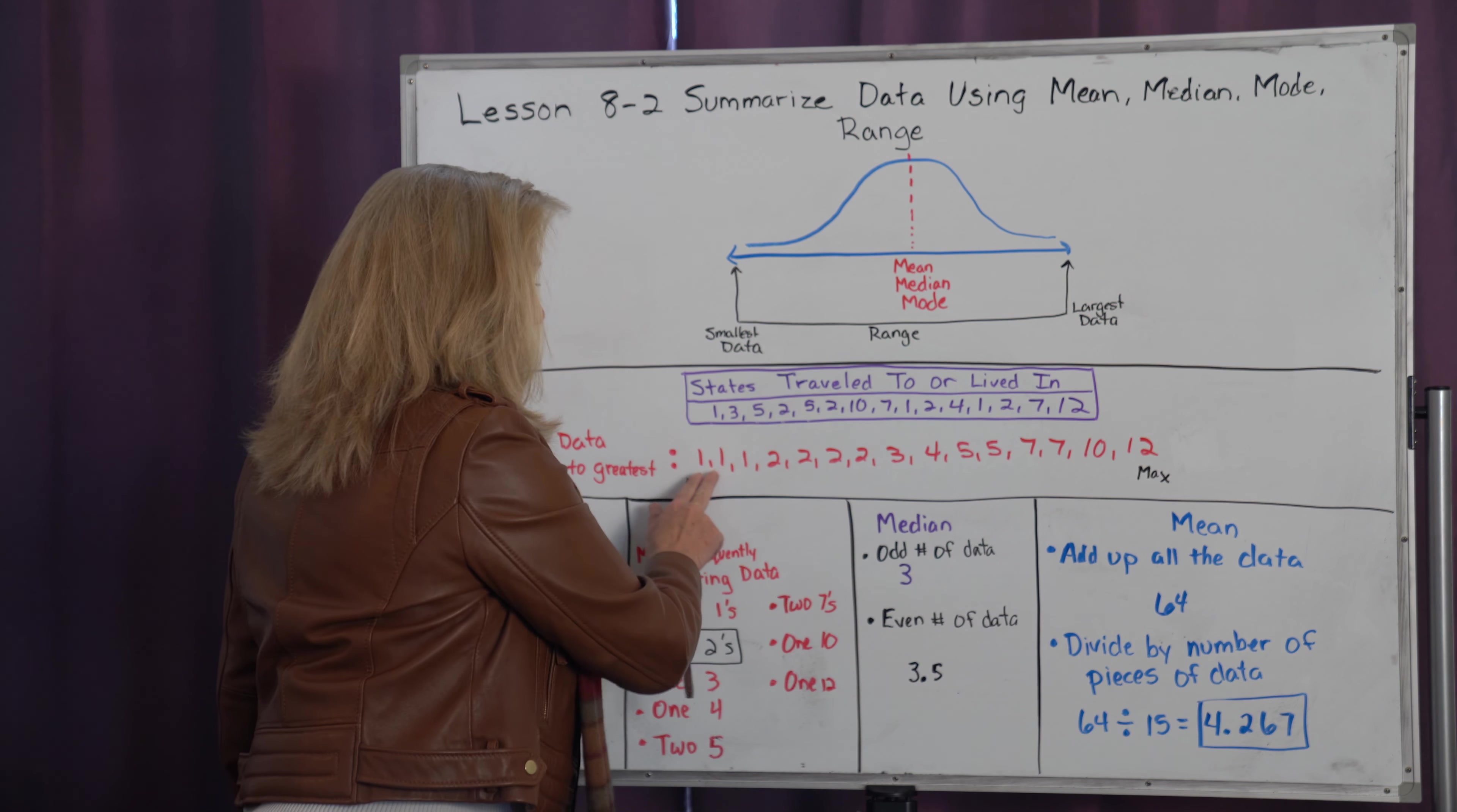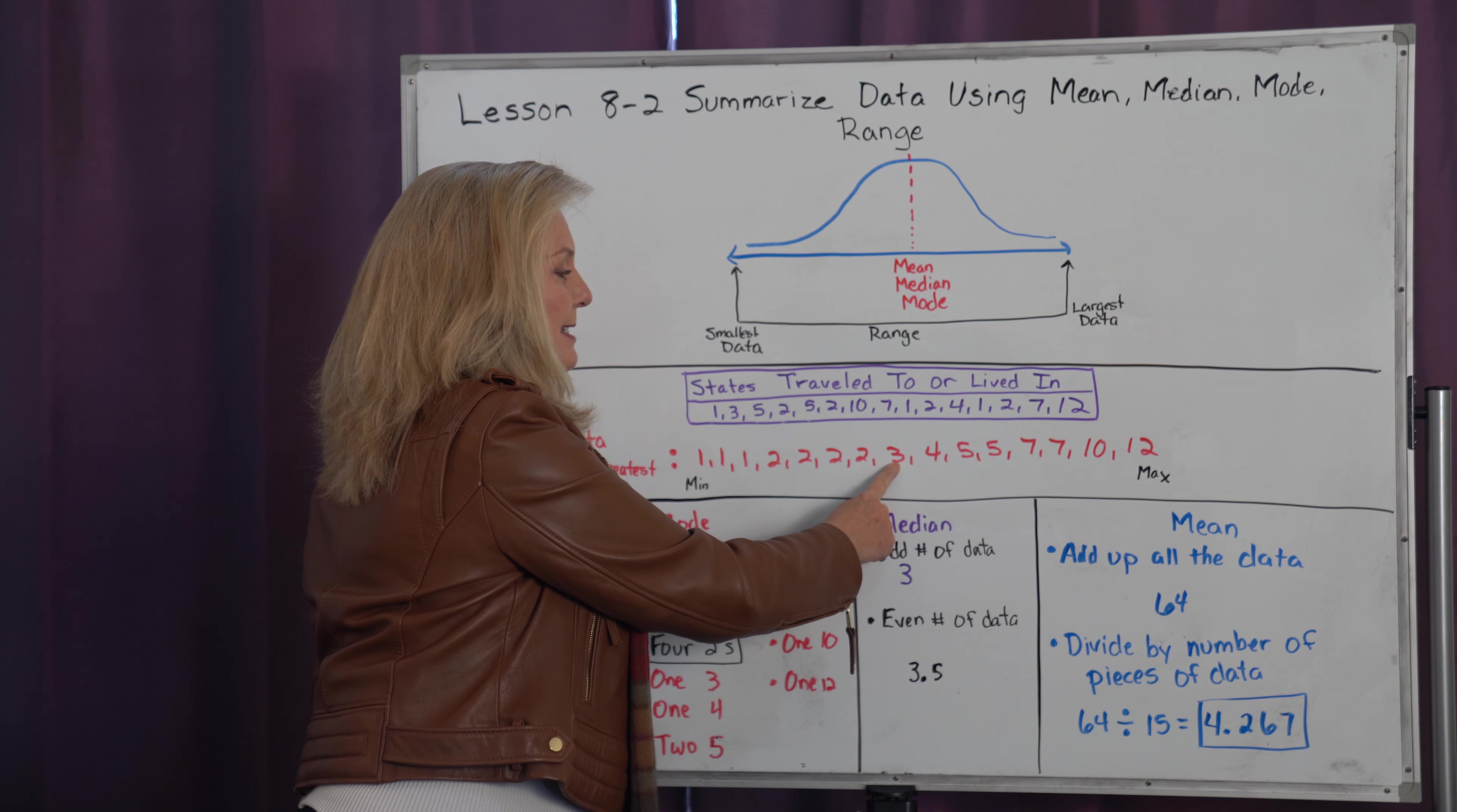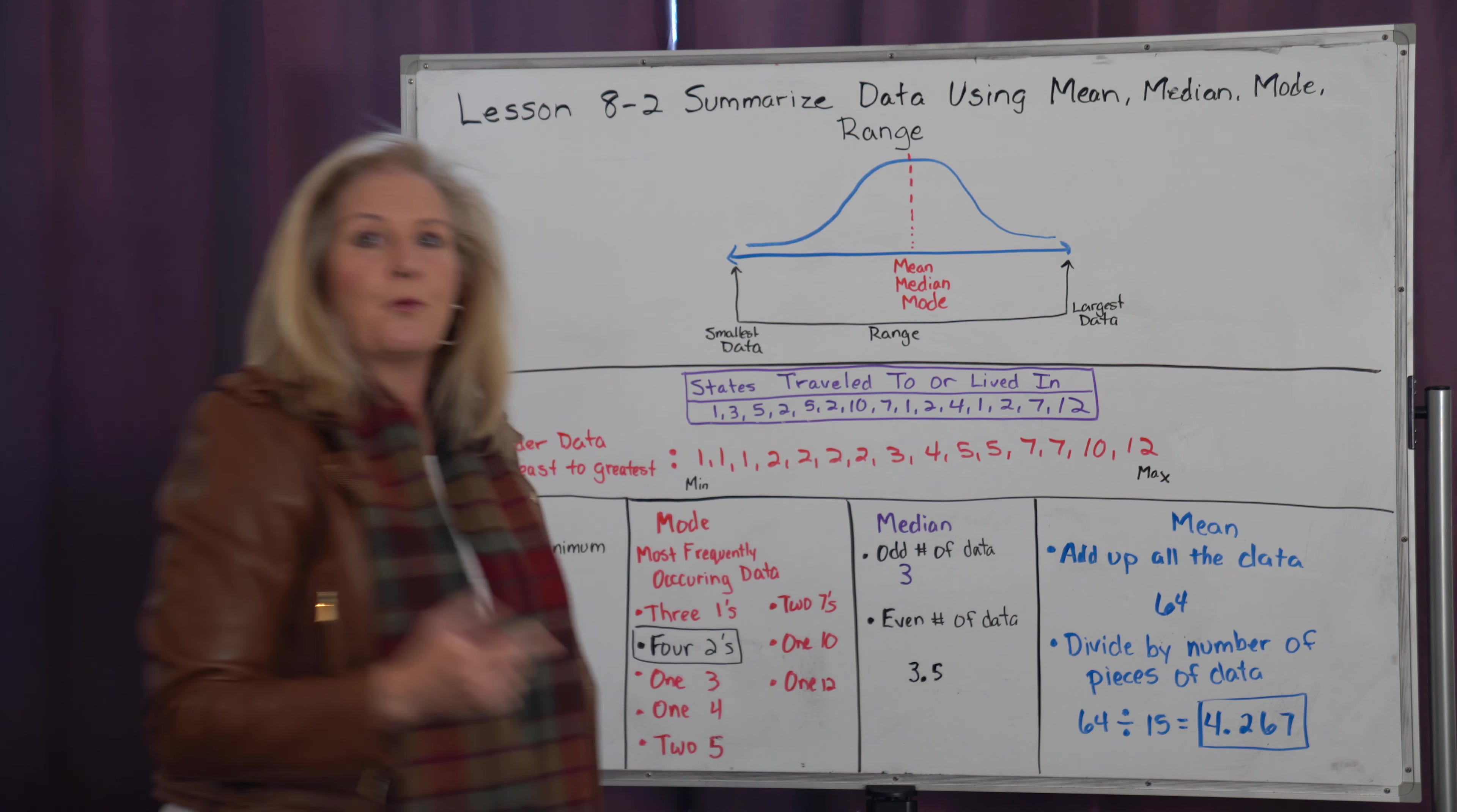I organize this and I see three people said they've lived or visited one state, four people have visited two, one has visited three, one has visited four, two have visited five, two have visited seven, then there's one person with ten and another person with twelve.